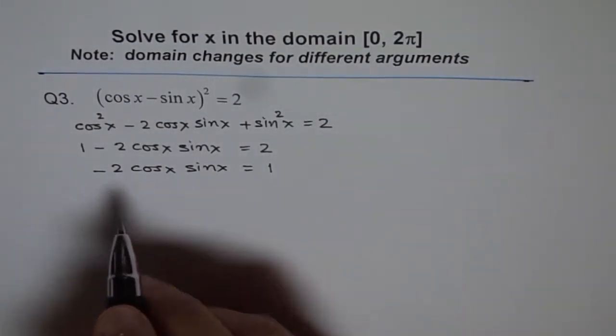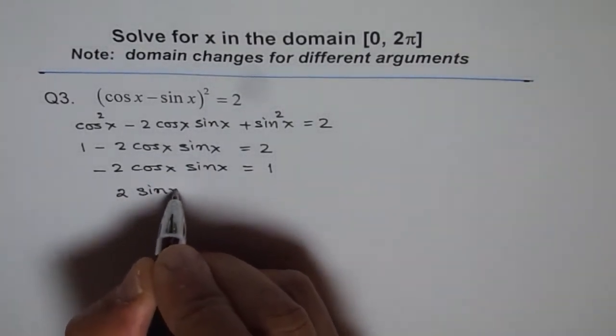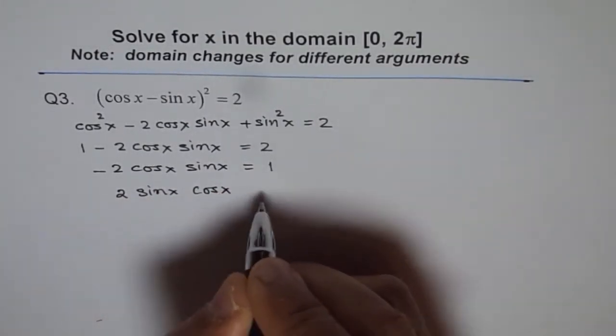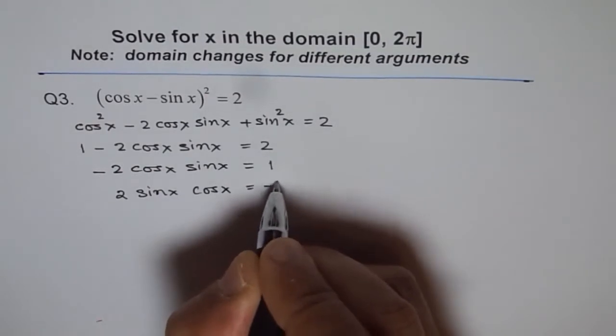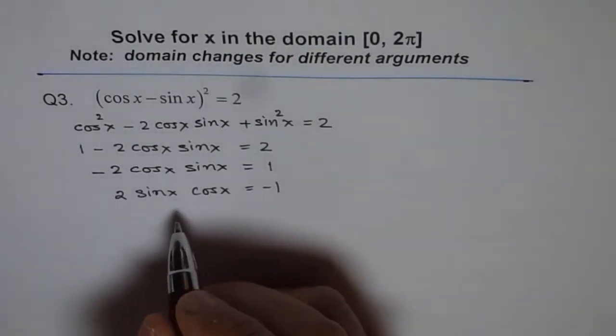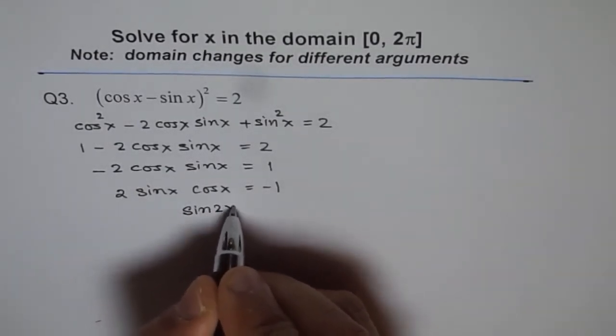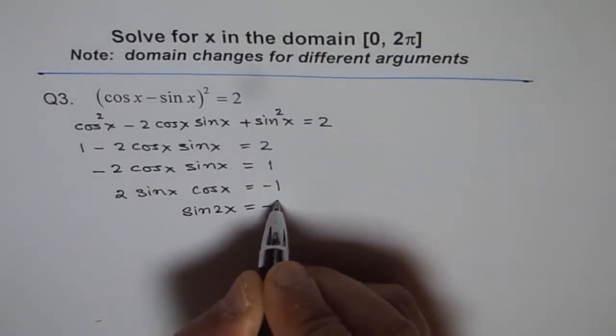We can write this as 2 sin x cos x = -1. Why did we write 2sin x cos x? That reminds you, right? It is a double angle formula. 2sin x cos x is sin 2x. So sin 2x = -1.